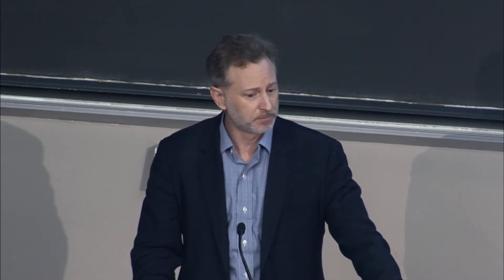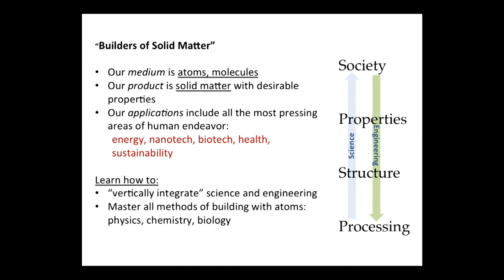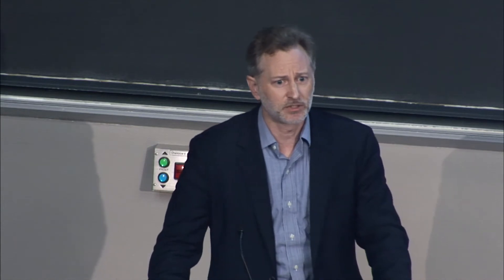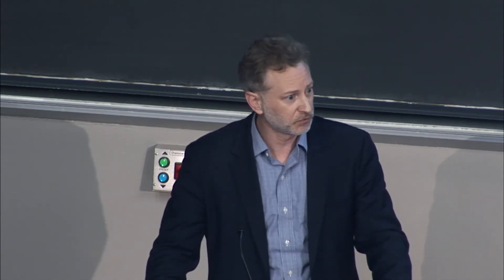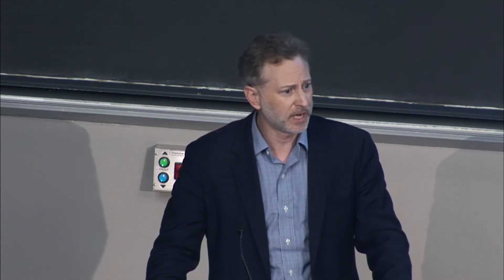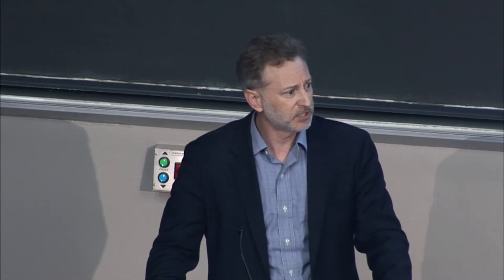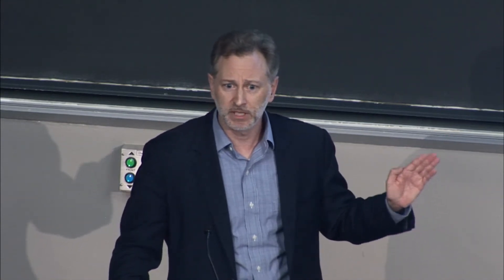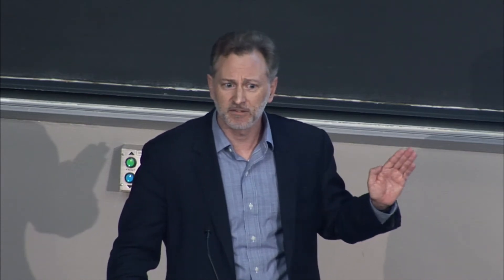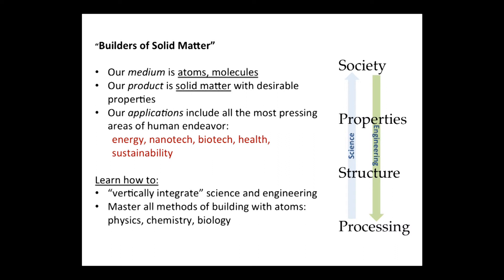Material science and engineering is built on several pillars. Our discipline includes both science and engineering. We really try to understand the relationship between processing of materials, structure, properties, and society. There are a variety of ways to make materials, to build them from the atomic scale up. How we process them gives rise to their structure — atomic structure, molecular and chemical structure, grain sizes, and mesoscale features. This structure is what drives the properties of materials, whether mechanical or electronic.